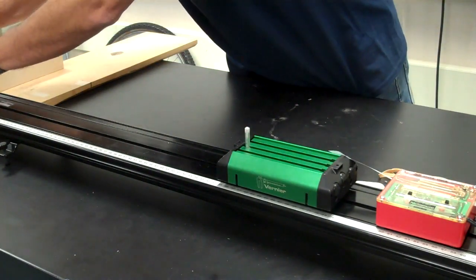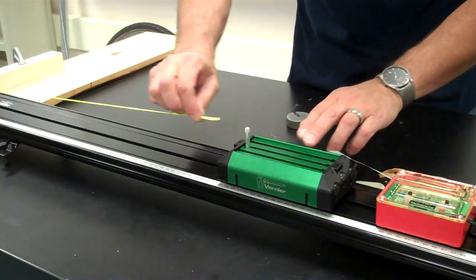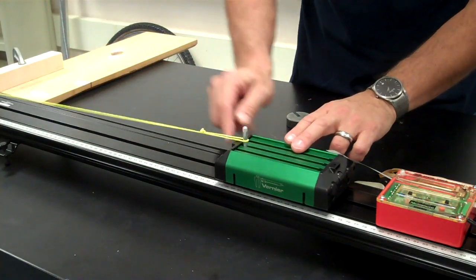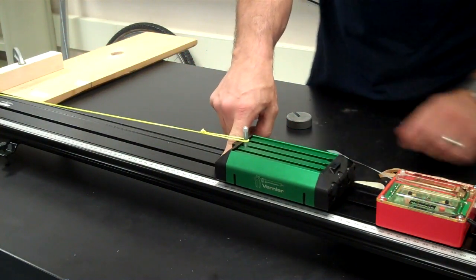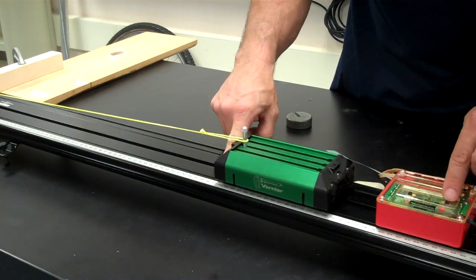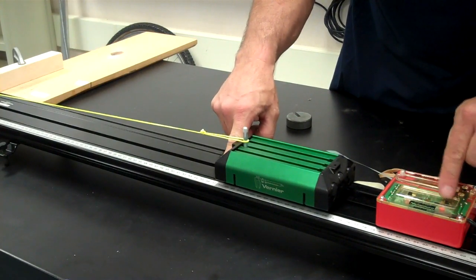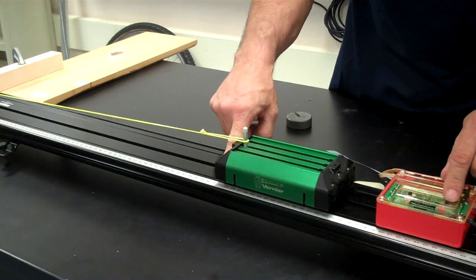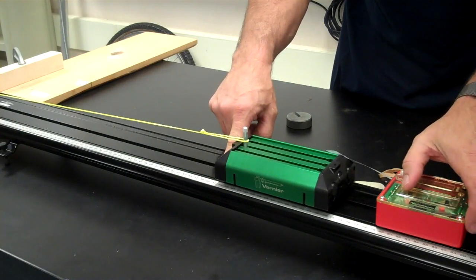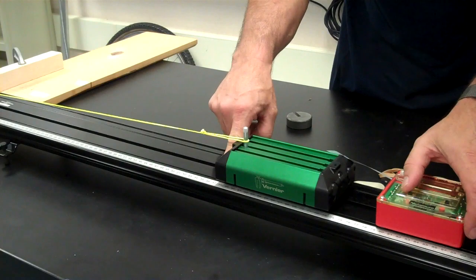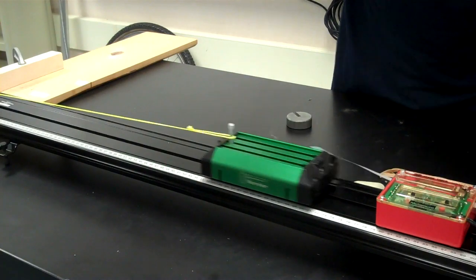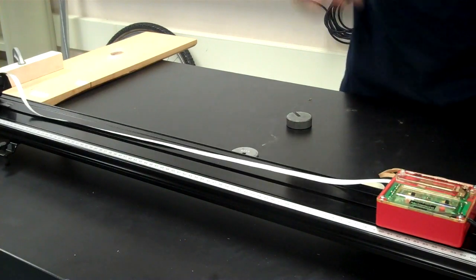Now it's ready to record the data. Go ahead, hook your string up, hold the cart in place with your finger, make sure your ticker timer is set on 60 hertz, not 10 hertz, but 60 hertz. And as soon as you turn the power switch on, release the cart and let it accelerate. And then turn it off.